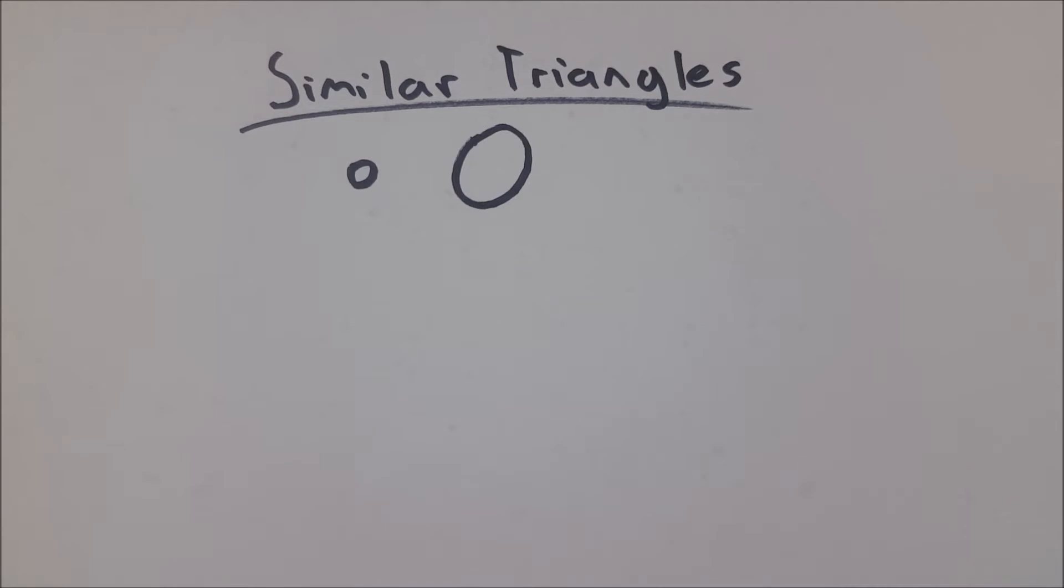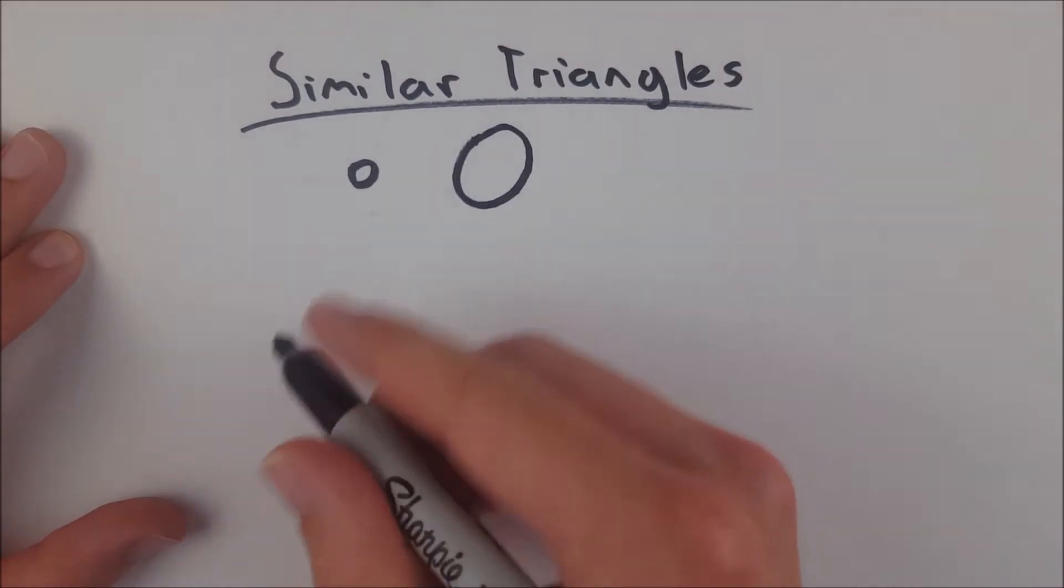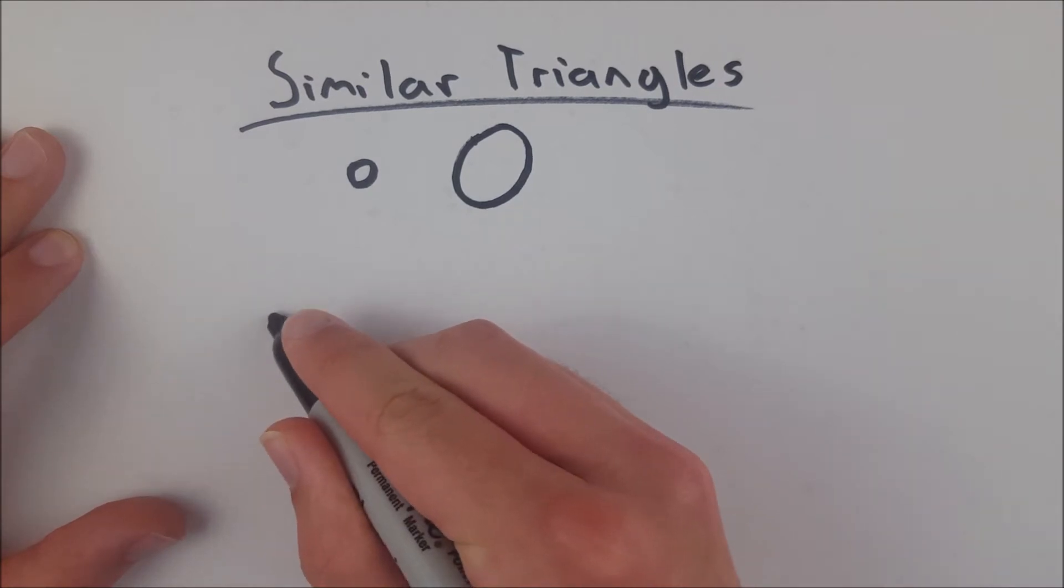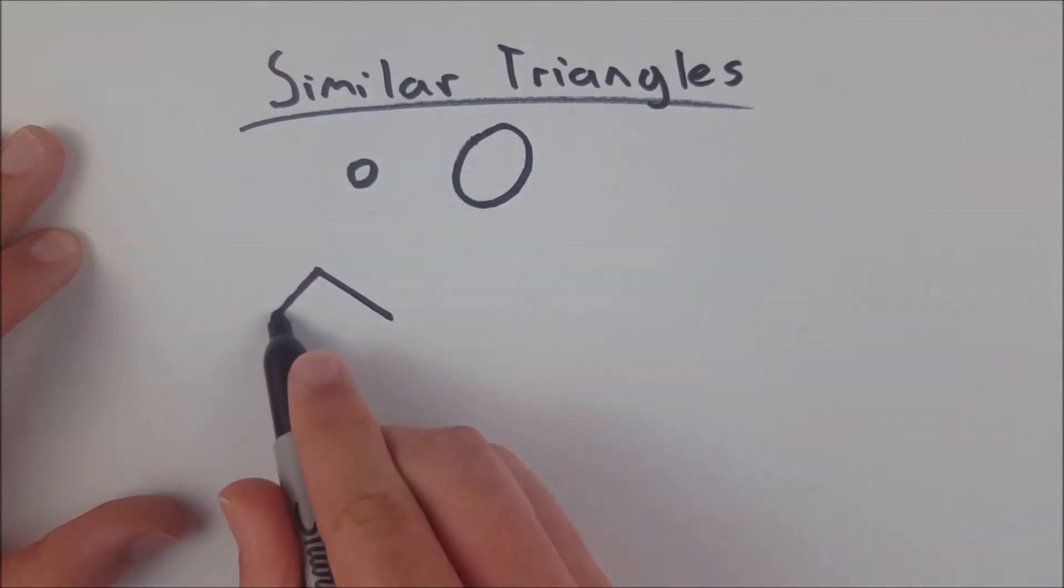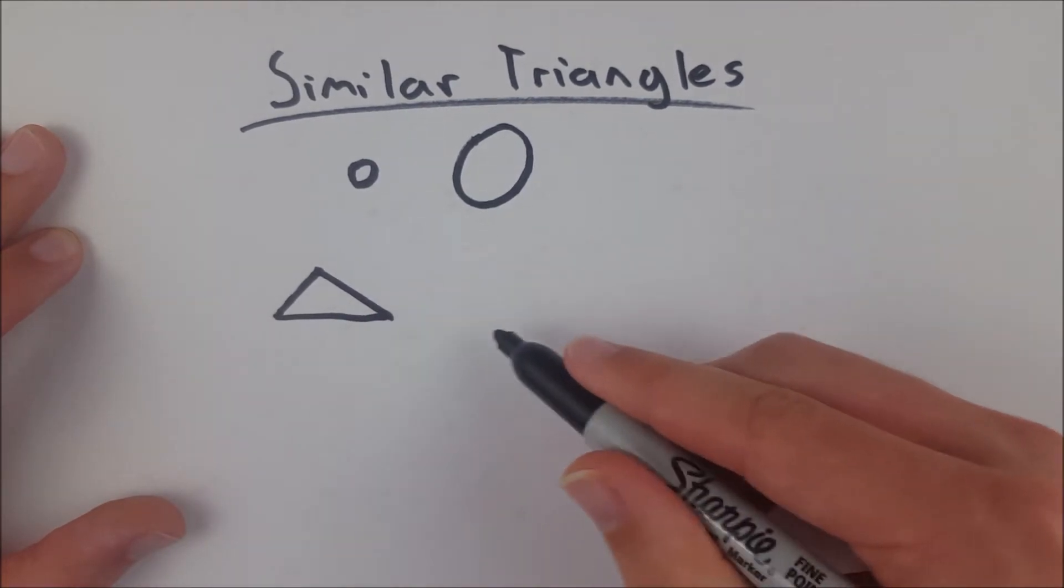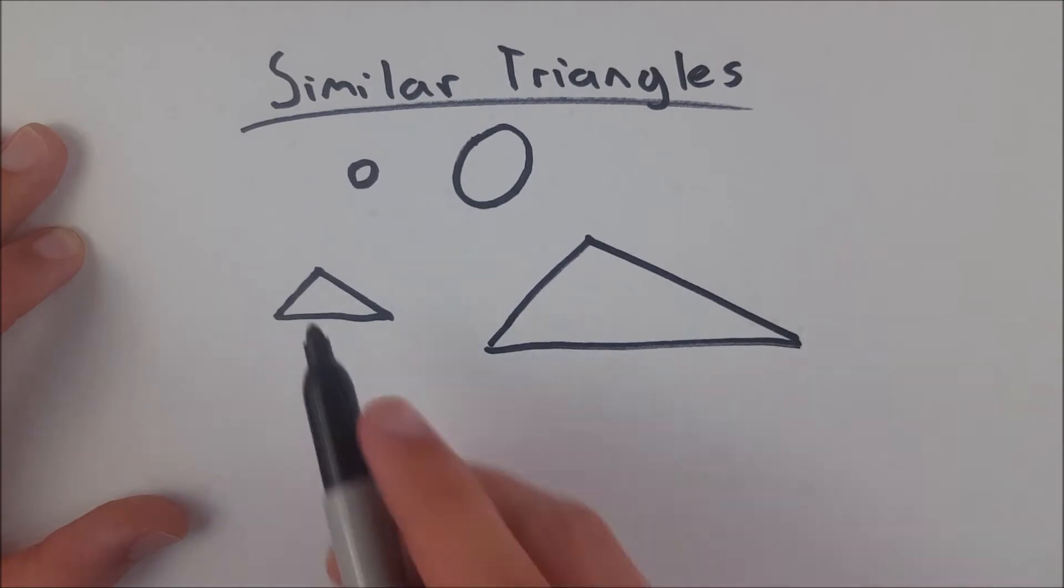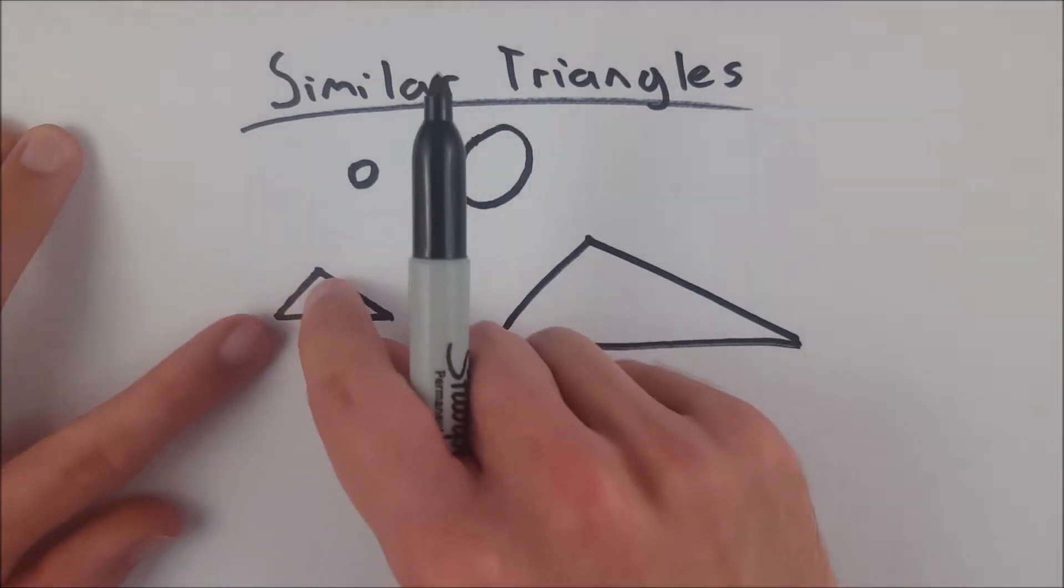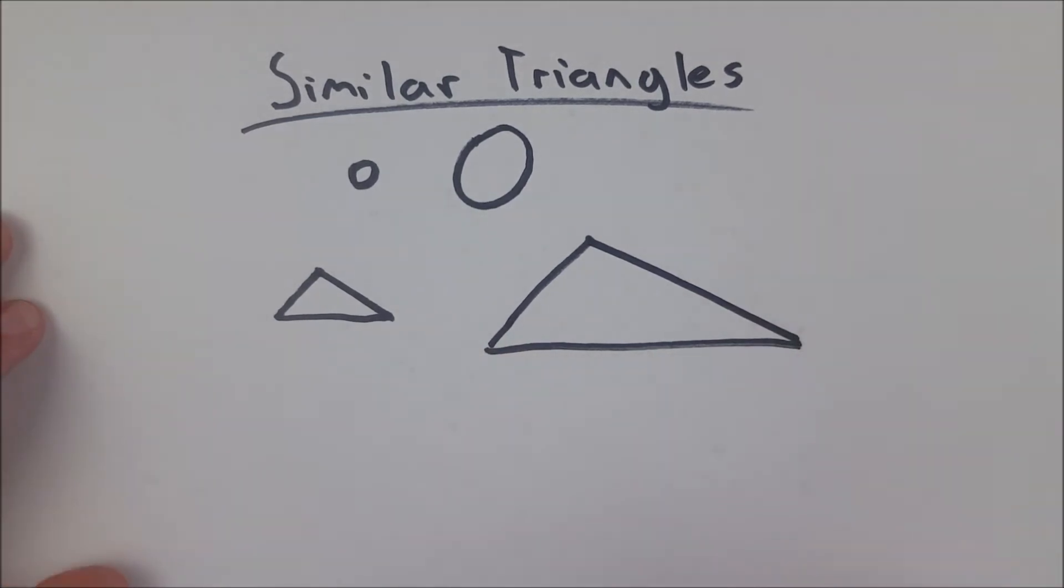Similar triangles are basically different sized versions of the same triangle. We could take one triangle here, look something like this, and a similar triangle to this triangle might look something like this. You can see this has the same basic shape as this triangle, but it's just like we've expanded it in a paint photo editor or something like that.